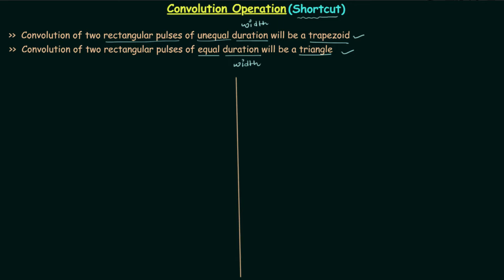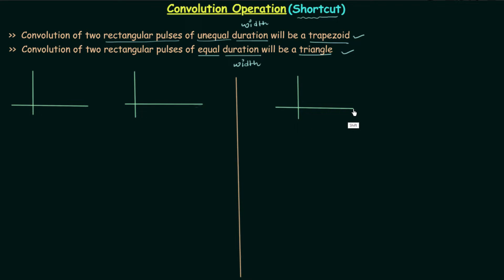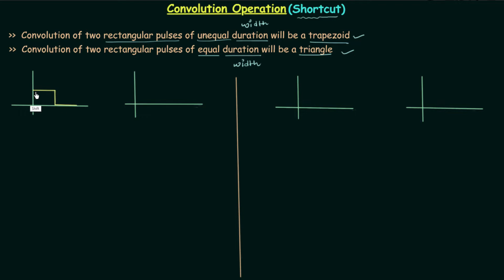There are two cases. In the first case I will take two rectangular pulses having unequal width or duration, and in the second case I will take two rectangular pulses having the same width. In the first case, let's say the first signal x1(t) is a rectangular pulse which is non-zero between 0 to t1, otherwise equal to 0, and its amplitude is equal to a1.